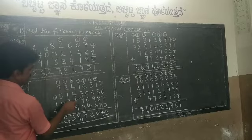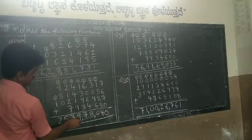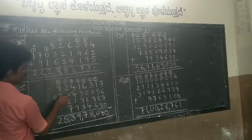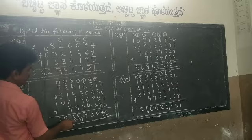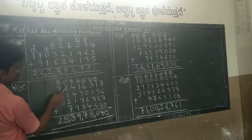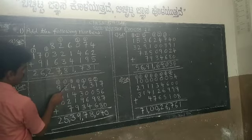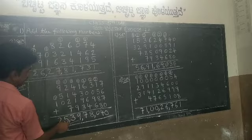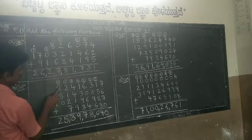In the thousands place with carry 2: 2 plus 6 is 8, 8 plus 0 is 8, 8 plus 6 is 14, 14 plus 4 is 18. Write 8 down and carry 1. In the ten-thousands place with carry 1: 1 plus 1 is 2, 2 plus 3 is 5, 5 plus 9 is 14, 14 plus 3 is 17. Write 7 down and carry 1. In the lakhs place with carry 1: 1 plus 4 is 5, 5 plus 4 is 9, 9 plus 1 is 10, 10 plus 9 is 19. Write 9 down and carry 1 to the ten-lakhs place.